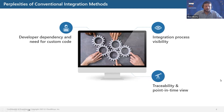The third pain point is traceability and point-in-time view. This includes a lack of transparency and accountability, a lack of efficiency and resiliency, and a lack of innovation and differentiation. When this happens, we cannot effectively communicate our proposition or credentials to customers and stakeholders, causing us to miss opportunities to create new offerings and enter new markets.